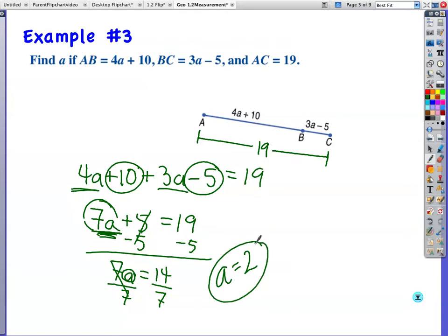And, we should go back and double check. If I put a 2 in here, I have 4 times 2, which is 8. 8 plus 10 is 18. If I put a 2 in here, I have 3 times 2, which is 6. 6 minus 5 is 1. Do 18 and 1 add up to 19? Well, certainly they do. So, we're on to the next problem.